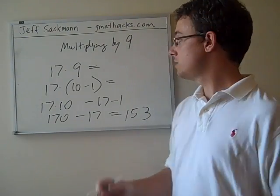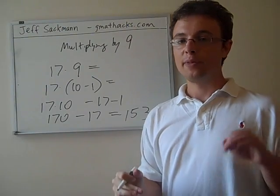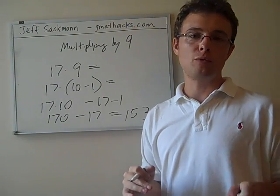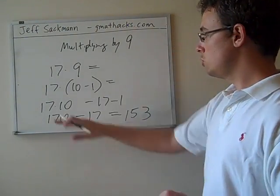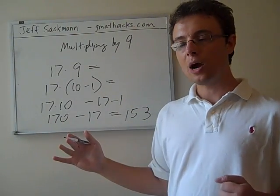That's the whole process. We're turning the 9 into a 10 minus 1. So, we might be introducing a couple more steps, but the key here is that these steps are almost bulletproof. No one's going to screw up 17 times 10 or 17 minus 1. All we're left with is a simple subtraction problem.